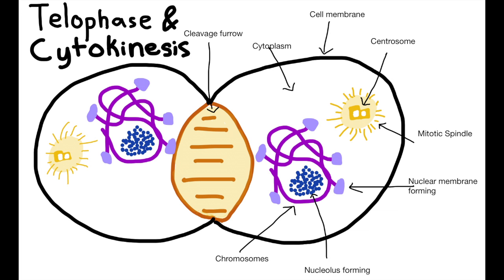And to end it all off, the cell goes through cytokinesis. This is the only time in which the phase differs between animal and plant cell. The division of the cytoplasm occurs along the telophase.